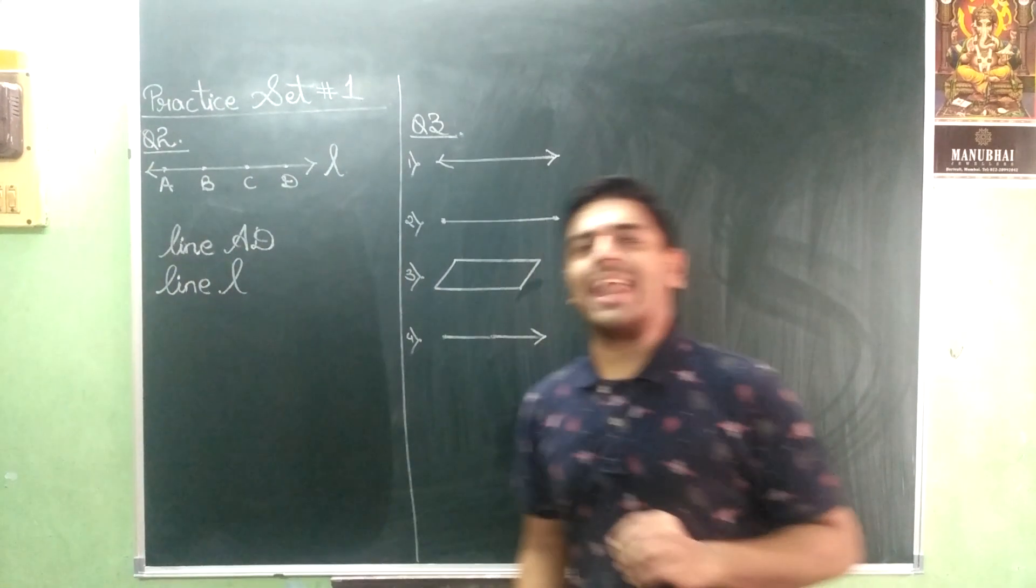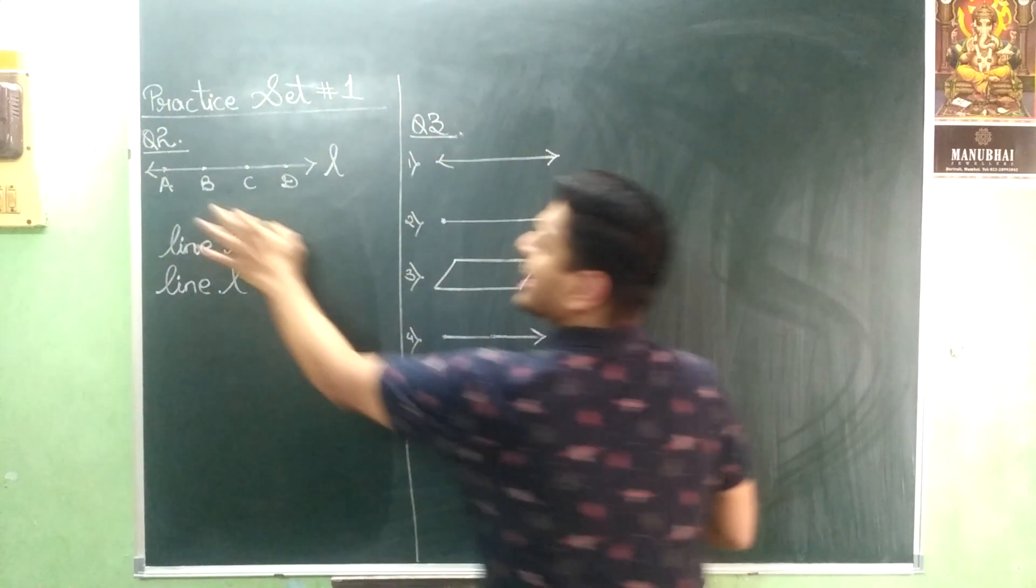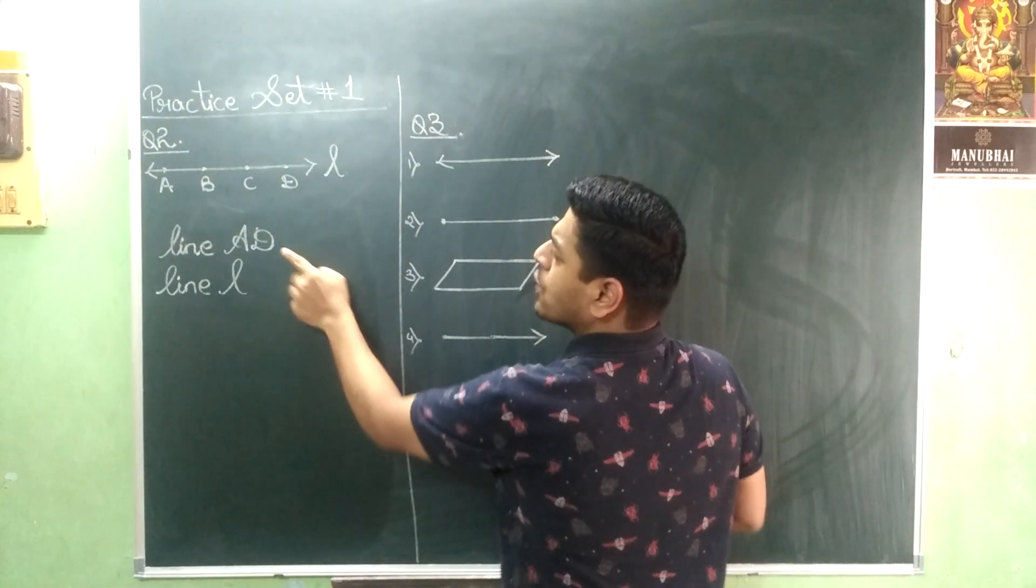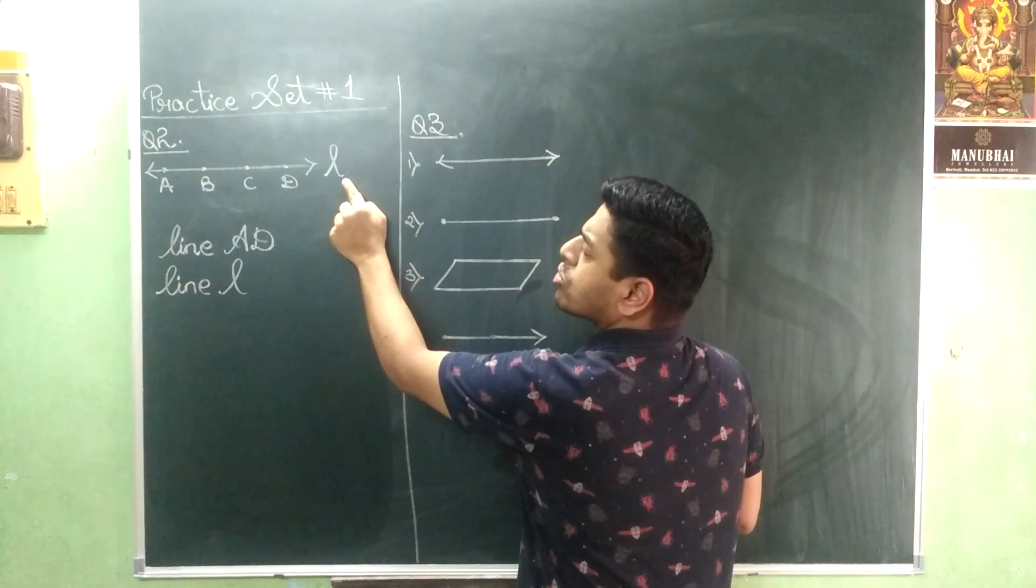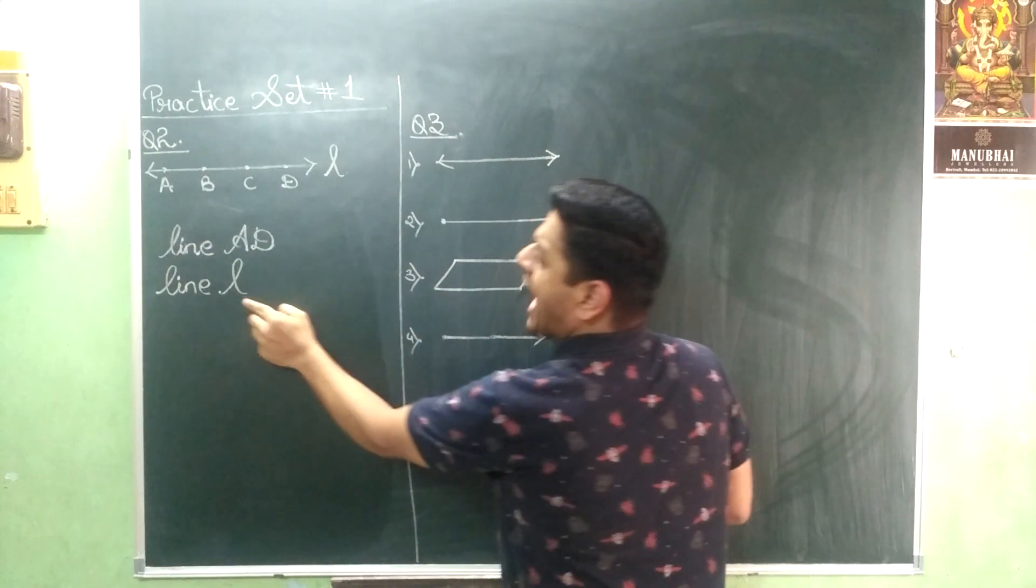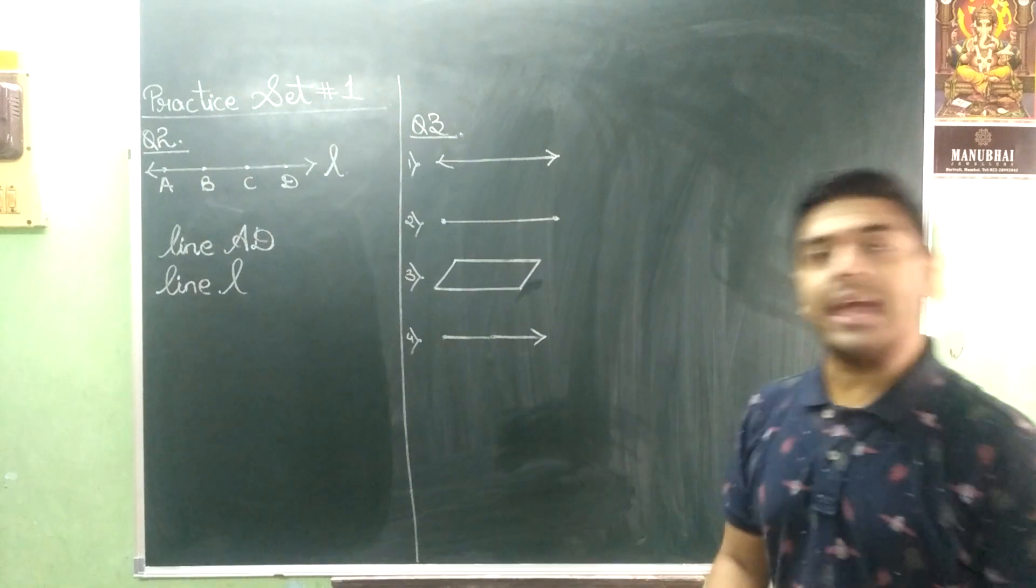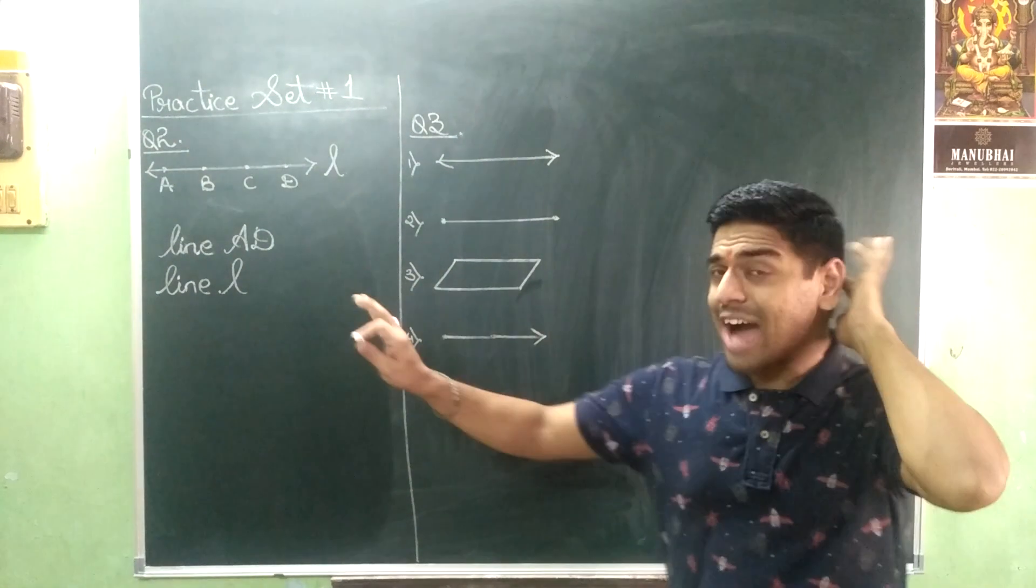By this what you can understand is that when capital letters are given we are supposed to use two capital letters at a time. And when one small alphabet is given, at that time you should use only small. That's all. After this nothing.